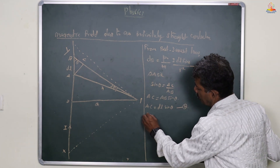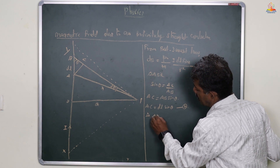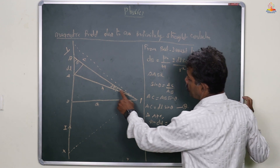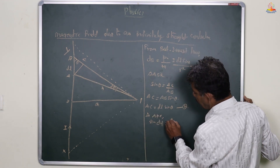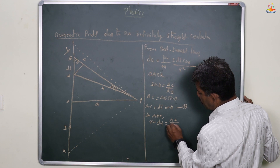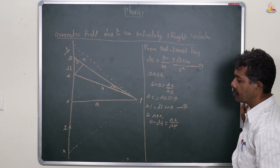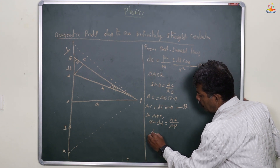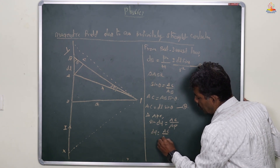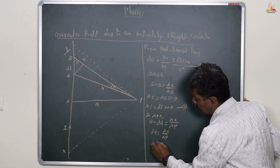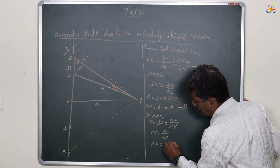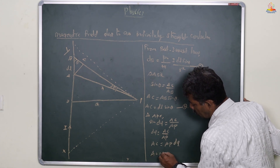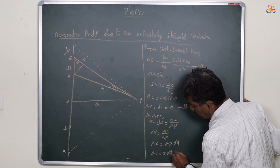We are taking another angle. In triangle APC, sin dφ is equal to AC by AP. So AC is equal to AP into dφ, which gives AC equals R into dφ. This is the third equation.